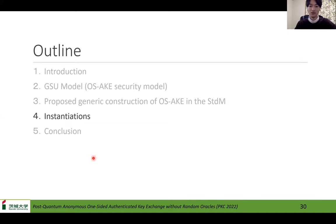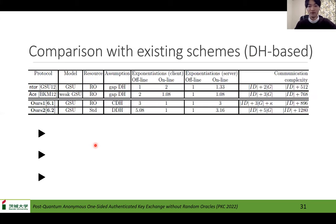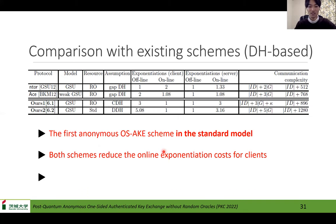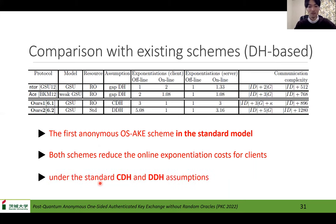Next, I'll introduce the instantiations. This is a comparison of DH-based schemes with existing schemes. O2 is the first anonymous OS-AK scheme in the standard model. Both schemes reduce the online computation cost for clients. The existing schemes are under the Gap-DH assumption, but O1 is under the standard CDH assumption and O2 is under the standard DDH assumption.